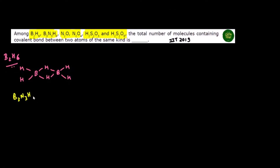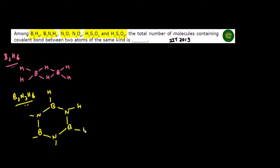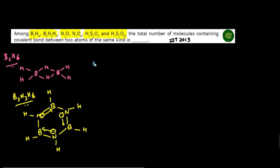The next structure is B3N3H6 — inorganic benzene. If you place B and N alternately and give each one hydrogen, the lone pair goes into the empty orbital forming a dative bond. Similarly for all positions, making it look like benzene — that's why it is known as inorganic benzene. In this also there is no same-element bond: no nitrogen-nitrogen, no boron-boron, no hydrogen-hydrogen bond.